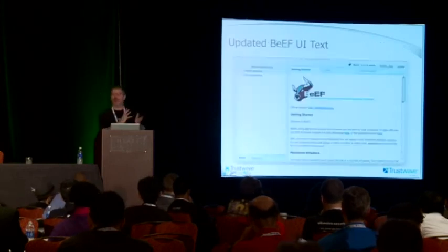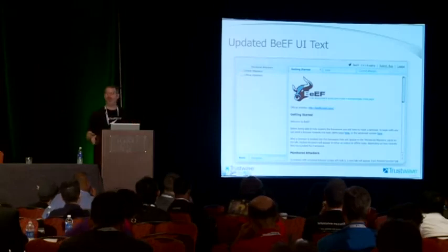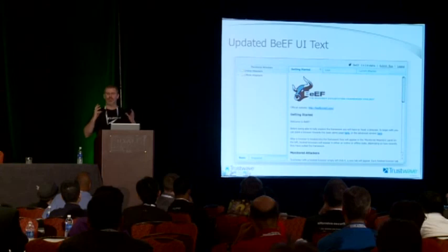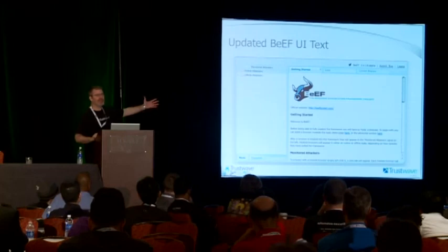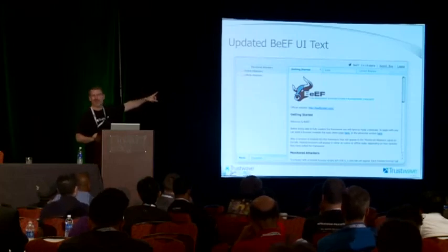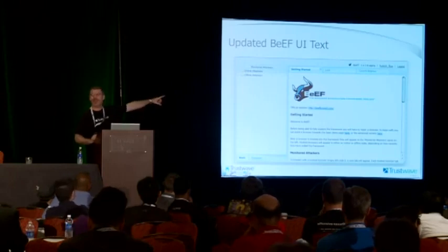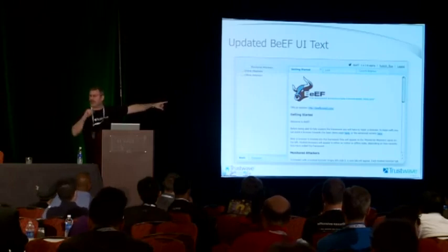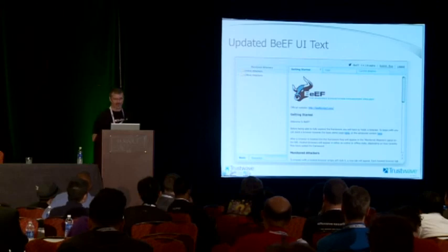Looking at a quick screenshot — you'll see some differences in the rest of the screenshots because I took them at different points in development. On the left-hand side you can see we now have 'monitored attackers,' 'online attackers,' 'offline attackers.' On the right-hand side you have a tab saying 'current attackers.' Once you select somebody, that screen comes up and you can dig in a little deeper.